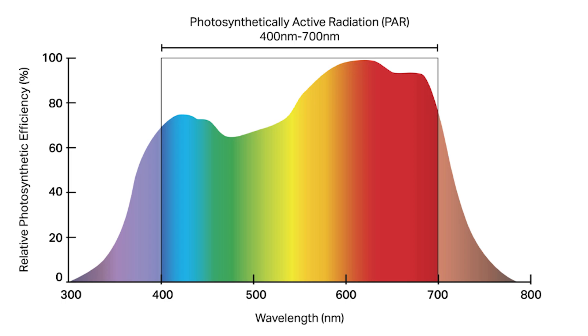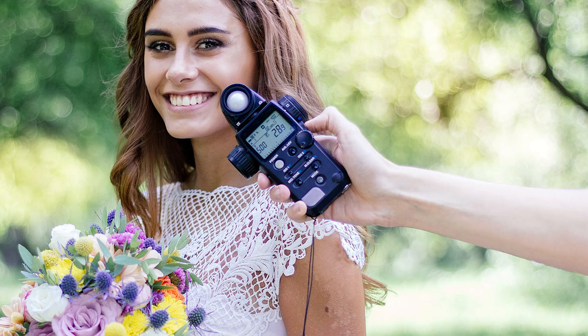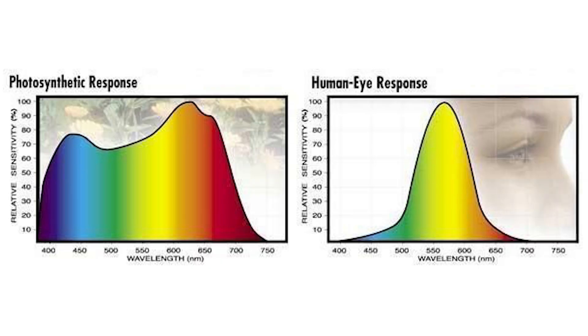When I was in photography school we used light meters to measure lux or luminosity. This is the intensity of the light as we see it — the brightness, basically. But this doesn't really translate directly over to plants.